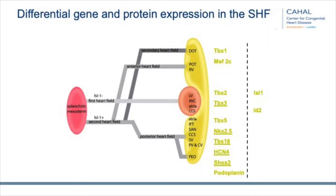Here you see a schematic drawing. This is the splanchnic mesoderm. You have the first heart field, which is Islet-1 negative, and the Islet-1 positive posterior second heart field. You can see all the different gene and protein expression in the second heart field that contribute to the different parts of the heart, but also to the conduction system. The first heart field also contributes to the cardiac conduction system.